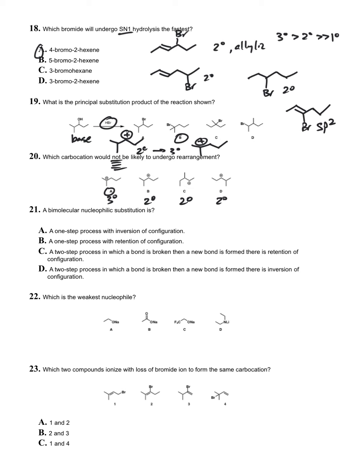Question twenty-one: a bimolecular nucleophilic substitution is a one-step process with inversion of configuration. That's the definition of SN2. Question twenty-two: which is the weakest nucleophile? Draw out their conjugate acids. The pKa chart is at the front of the exam. Alcohol is 16, acid is 4, alcohol is 16, amine is about 40. The one with the lowest, this is the strongest acid, is going to give the weakest nucleophile.